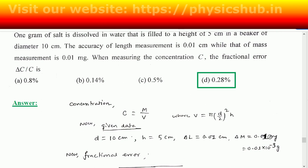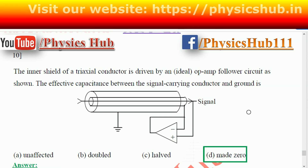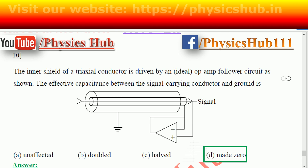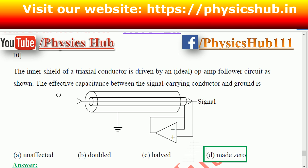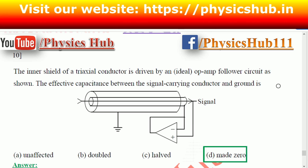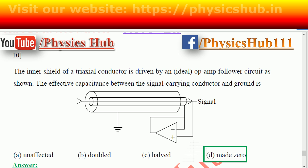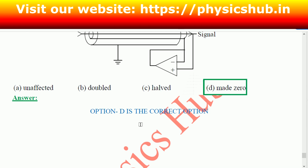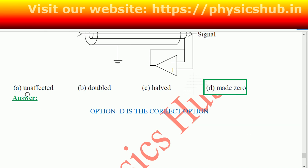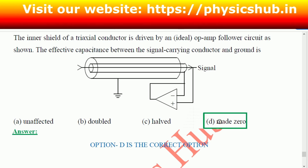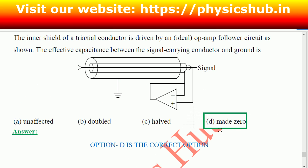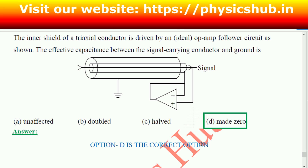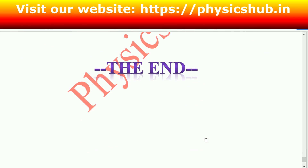Finally, question number ten: the inner shield of a triaxial conductor is driven by an ideal voltage follower circuit as shown. The effective capacitance between the signal-carrying conductor and ground is made zero. So option four is the correct option, and this is the end of Set 26.